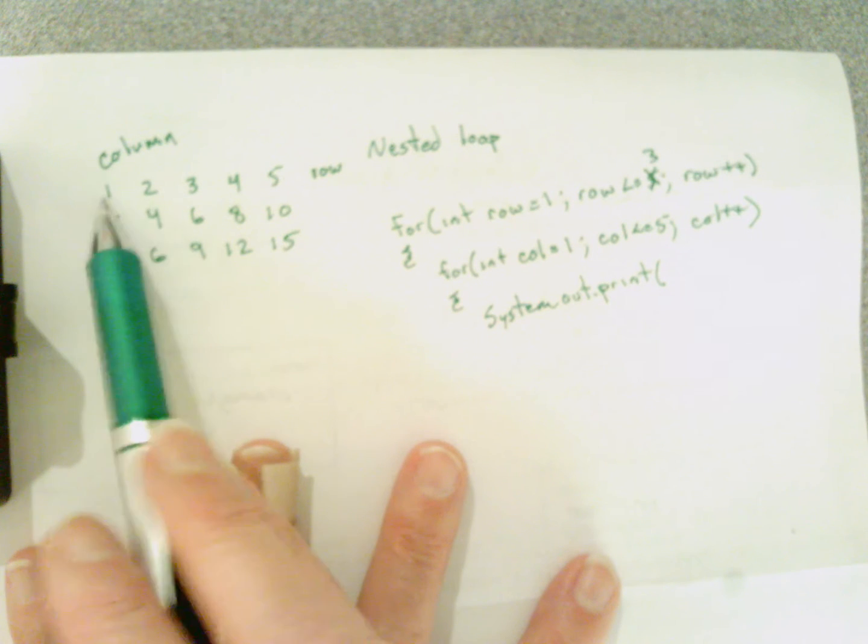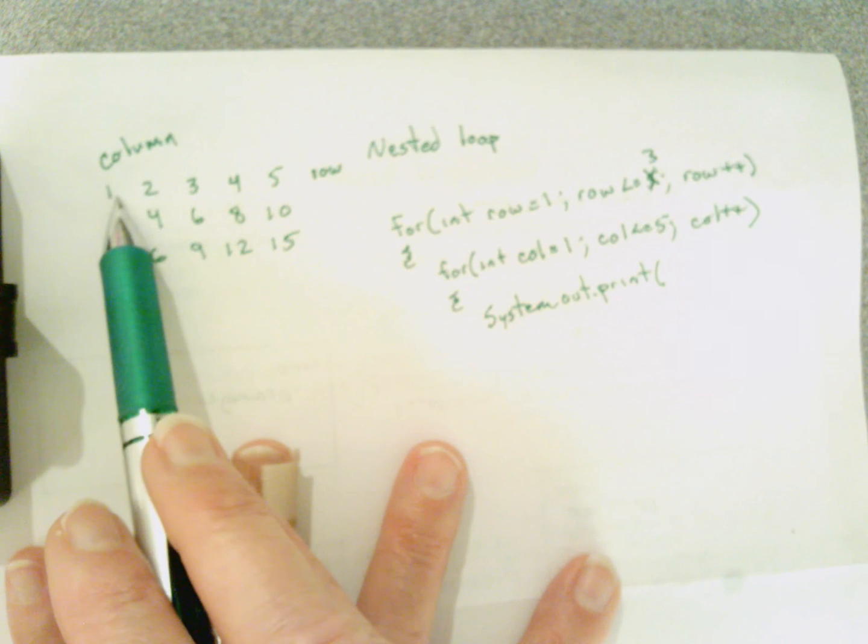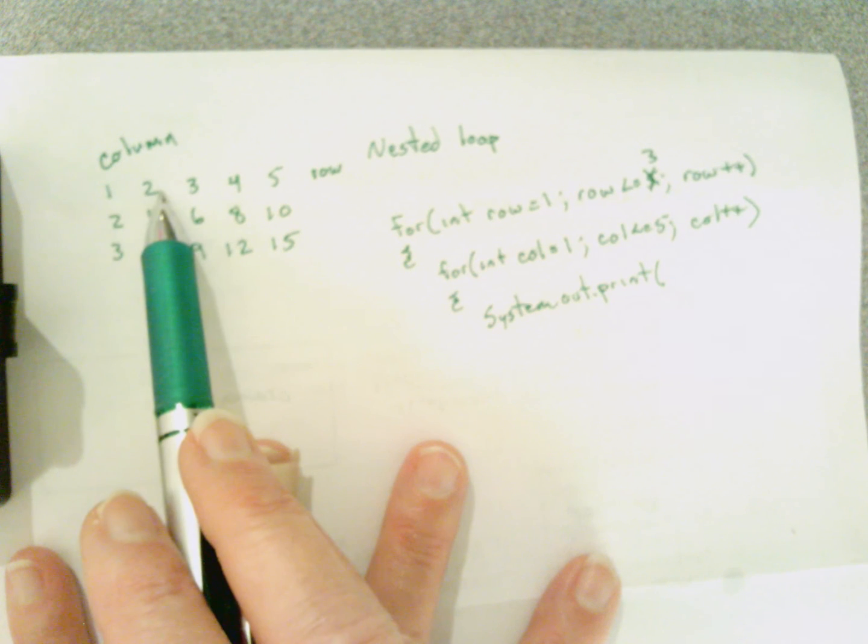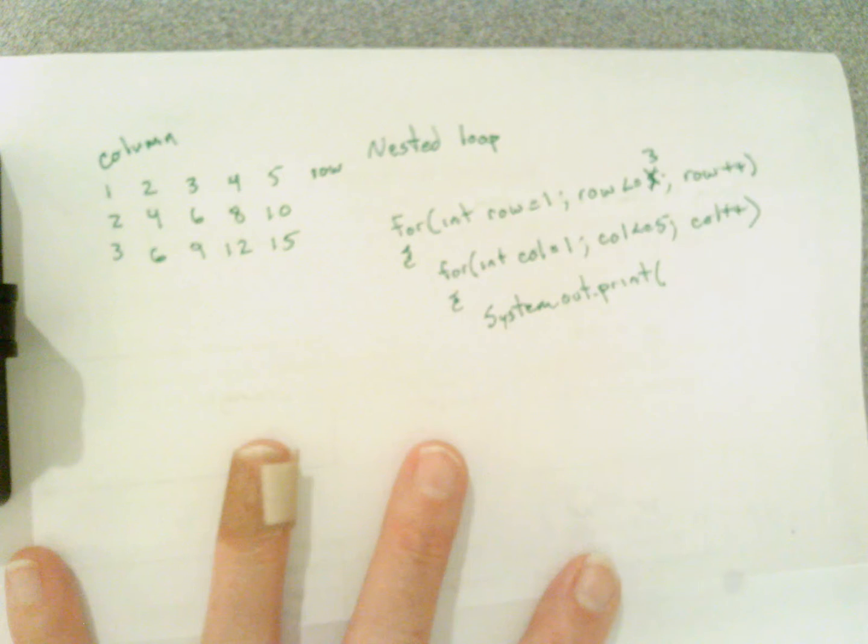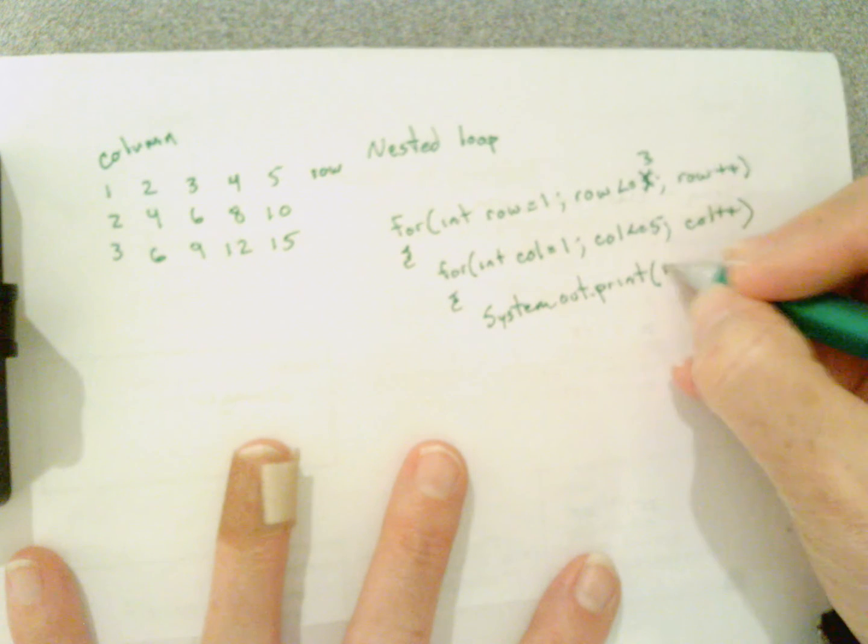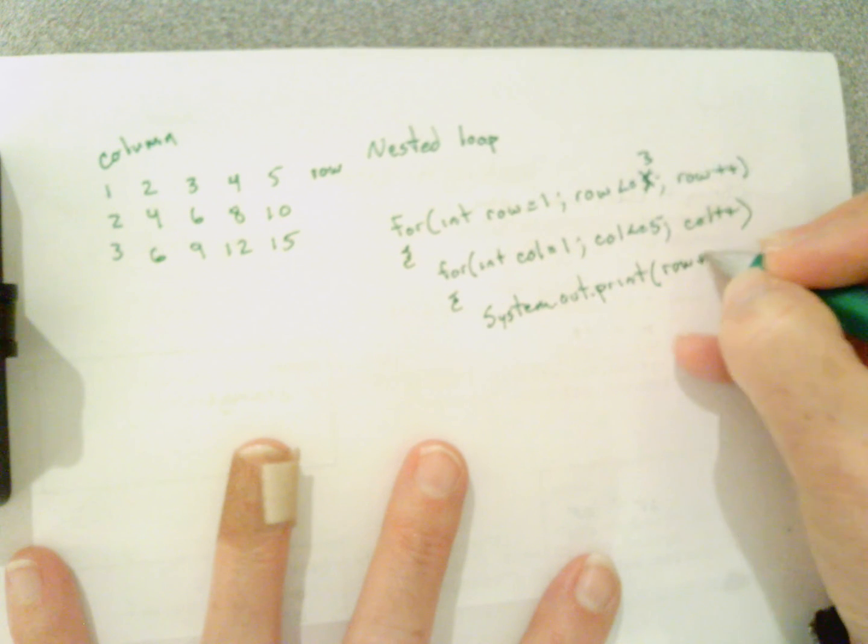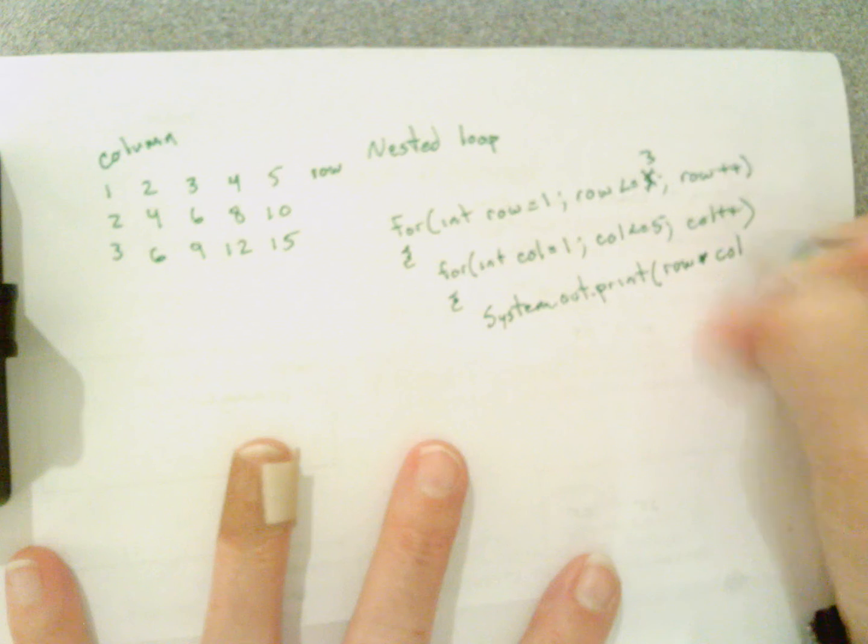Well, if I'm on row one and I'm in column one, row times column will equal one. If I'm in column two, row times column will equal two, and so on. So I want to print row times column.